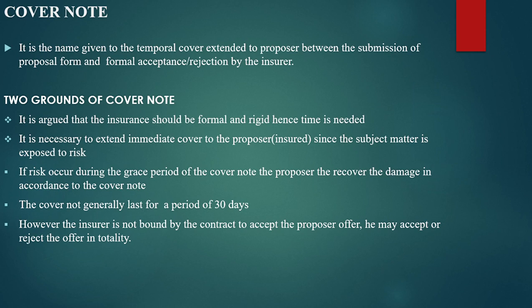Even if the insurer may reject the proposal form, the insured is already covered by the temporal cover through the cover note, because his property is already exposed to risk. The ground for the cover note is that insurance should be formal and rigid, hence time is needed. The insurer's contract is formal since it is through writing — through the proposal form — so the insurer's company must be given time to assess the proposal form.